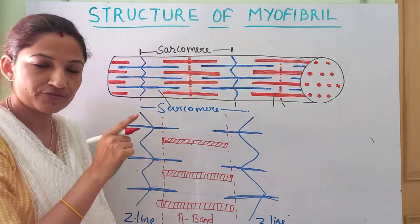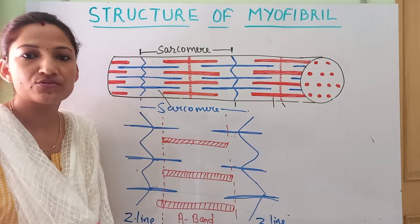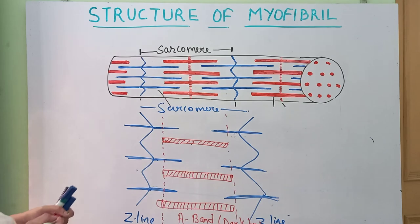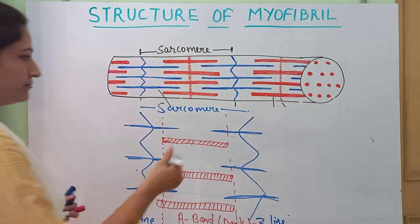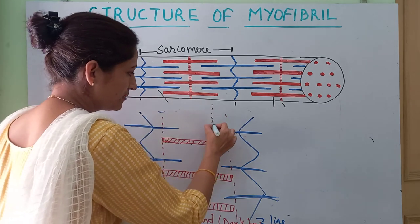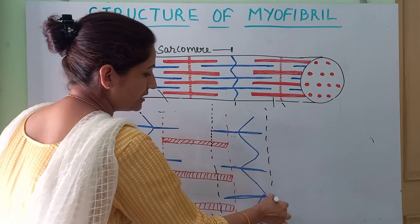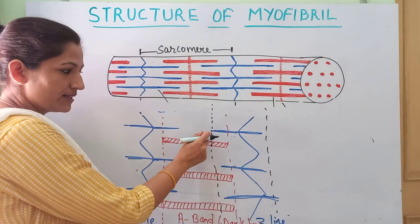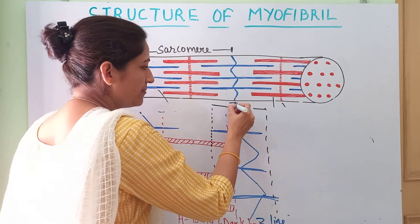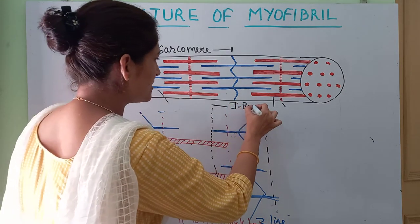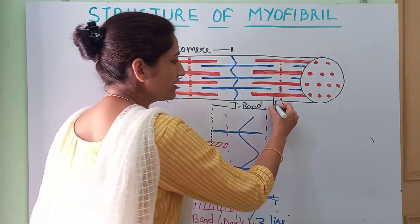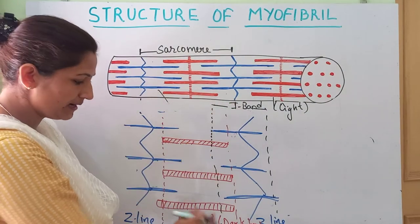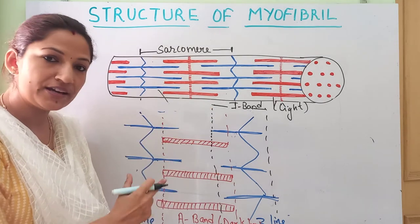The myosin band forms the dark band called the A band, which is the anisotropic band. This is a dark band. Now the other region — from the Z line till the point where the actin is extended on both sides of the Z line — this is the I band, the isotropic band, or the light band. The thin filament is lighter; the thick one is darker. So I band is of actin, and A band is of myosin.